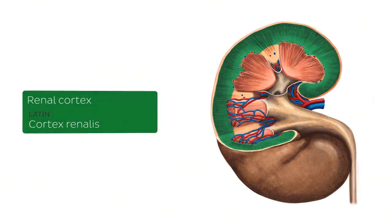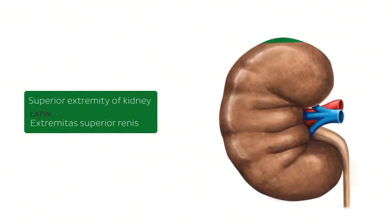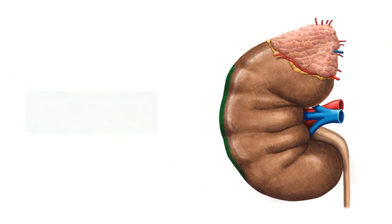The next structure seen here highlighted in green is known as the superior extremity of the kidney, also known as the superior pole. As the name indicates, this is the upper part of the kidney where the adrenal glands are situated. On the next image, you can clearly see the adrenal gland added on the superior extremity of the kidney.